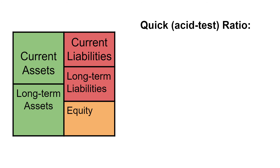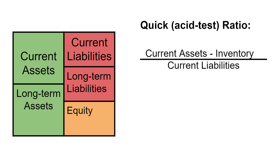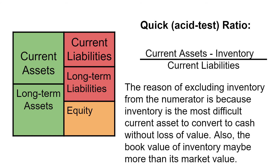For quick ratio, also called the acid test ratio, the formula is a little bit different — we exclude inventory from current assets. The reason for excluding inventory is because it is the most difficult current asset to convert to cash without loss of value. Also, the book value of inventory may be more than its market value.